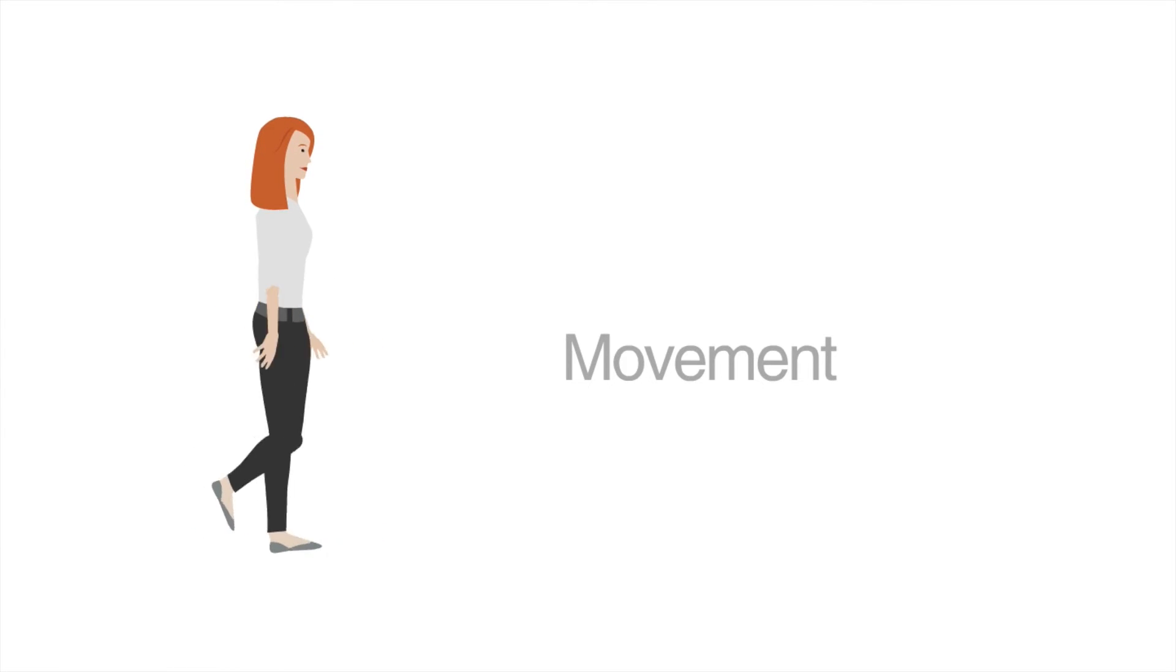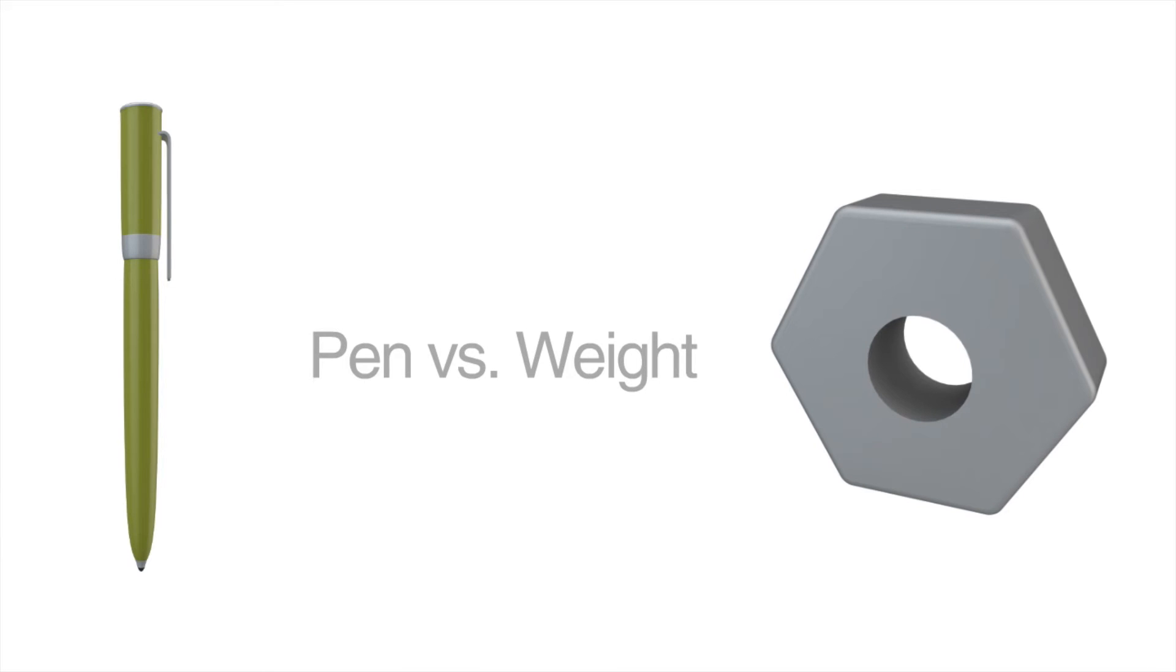Some activities require more motor units than others. For example, let's say you're trying to lift a pen. The pen is a small mass, so the force you'll need to lift it will also be very small. As such, lifting the pen will only require a small number of motor units. Now let's say you're trying to lift a five pound weight. This will require a much larger force, so you will have to use more motor units. The more motor units you use, the more motor neurons and muscle cells that are being activated.